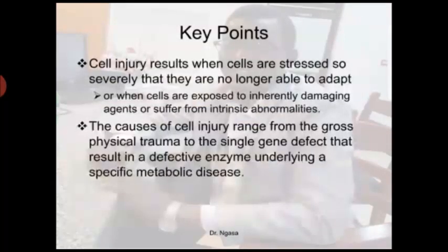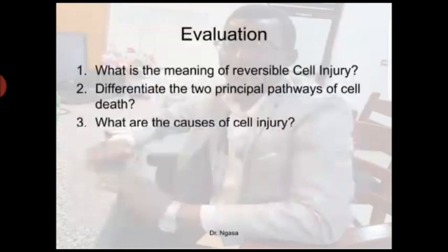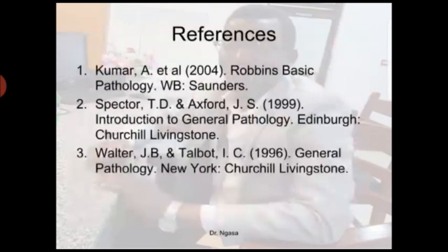Key points: cell injury results when cells are stressed so severely that they are no longer able to adapt, or when cells are exposed to inherently damaging agents or suffer from intrinsic abnormalities. The causes of cell injury range from gross physical trauma to single gene defects resulting in a defective enzyme underlying a specific metabolic disease. For self-evaluation, students should be able to explain the meaning of reversible cell injury, differentiate the two principal pathways of cell death, and identify the causes of cell injury. Thank you.